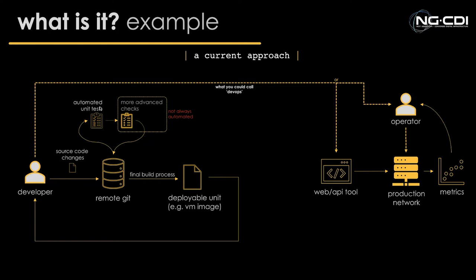They could then run more advanced checks — maybe putting some code on a physical switch in the office and seeing if we see the expected behavior, and rolling back if not. If successful, you can build the final executable — some form of deployable unit like a VM image or a binary. The developer can get that back, pass it to the operator either via a web or API tool, or directly deploy it to the production network, gather metrics, and expose some of those metrics back to the developer.